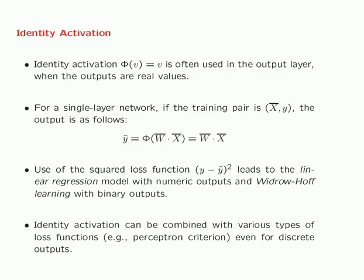You can also use 1s and minus 1s — binary outputs — with identity activation and a squared loss. That kind of learning is referred to as Widrow-Hoff learning, which was historically the second method proposed after the perceptron. The use of identity activation is quite common even in multilayer networks, sometimes in hidden layers, and in the output layer even for discrete outputs. As we'll see in later lectures, there are many models which use identity activation but with complicated nonlinear loss functions.